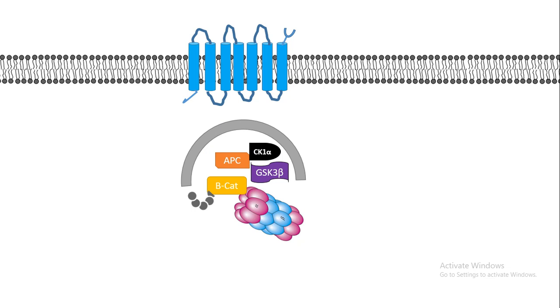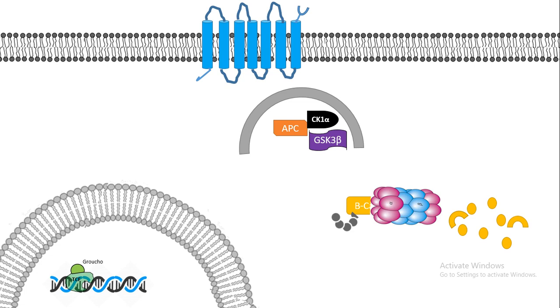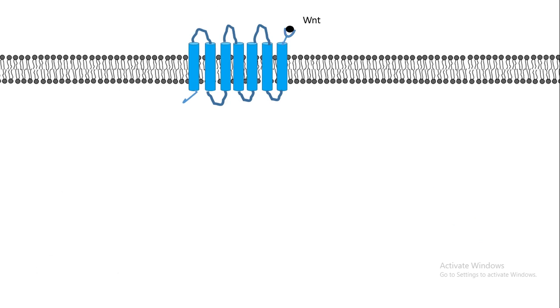Beta-TrCP is an E3 ubiquitin ligase. Beta-TrCP transfers ubiquitin chains to the beta-catenin, and ubiquitinated beta-catenin degrades via the ubiquitin-proteasome mediated pathway. Meanwhile, in the nucleus, the WNT target genes are bound by transcription factors of the TCF and LEF family, but these TCF-LEF family transcription factors, in absence of beta-catenin, are bound to Groucho, which is a transcriptional repressor, and thereby no WNT target genes can be expressed.